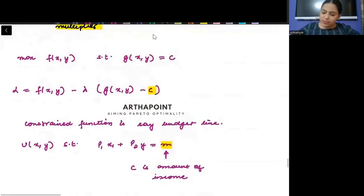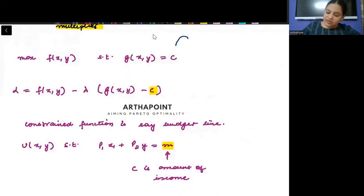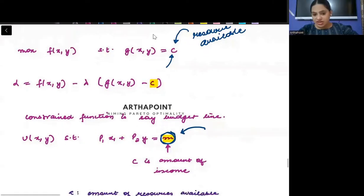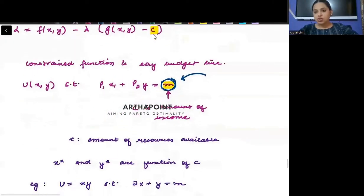So try to notice here that I have this C here. This C is my resource that is available. For example, when I was talking about maximizing my utility subject to my budget constraint, then this C was represented by the income. So C is my amount of income. This constraint is my amount of income. And as my income changes, as my income increases, of course I will be able to afford a better bundle.